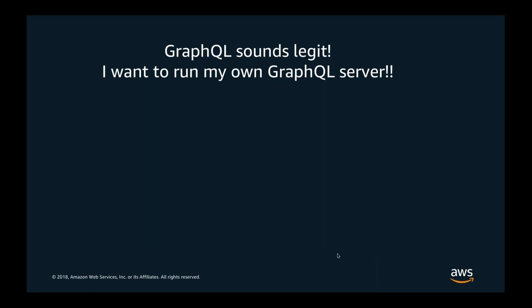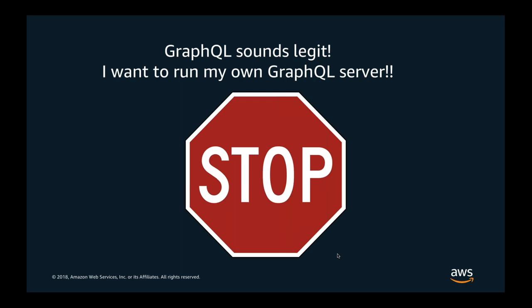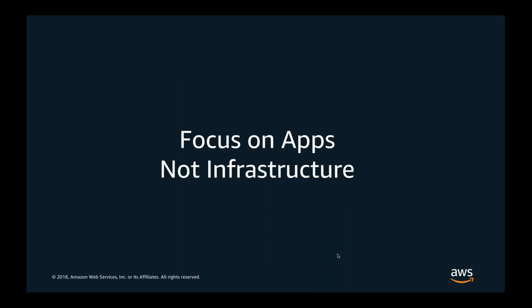Until last year I used to hear a lot from customers: 'GraphQL sounds great and I want to run my own GraphQL server on AWS.' Well, let's stop right there — servers are so 2014! When you talk about servers, you have to think about installing, patching, configuring, and deploying. If you're serious about it, you worry about high availability and auto scaling — lots of work and lots of undifferentiated heavy lifting. You should be focusing on your application and your business differentiators, not the infrastructure. The less time you spend on infrastructure maintenance and operations, the more time you can focus on new features and improving your application to speed up business outcomes.